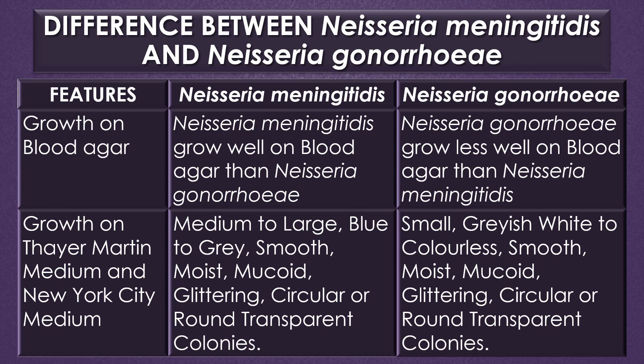In blood agar, Neisseria meningitidis grows well, but Neisseria gonorrhoeae grows less well on blood agar. On Thayer Martin medium and New York City medium, Neisseria meningitidis shows medium to large, blue to grey, smooth, moist, mucoid, glistening, circular or round transparent colonies. Neisseria gonorrhoeae shows small, greyish-white to colorless, smooth, moist, mucoid, glistening, circular or round transparent colonies.